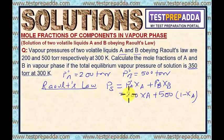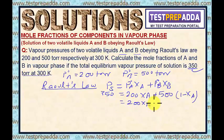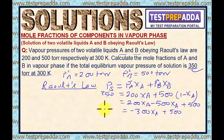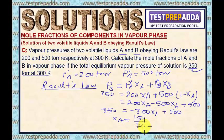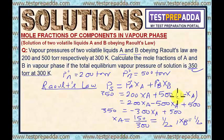We write X_B as (1 − X_A). Substituting P_S = 350: 200·X_A + 500·(1 − X_A) = 350, which gives −300·X_A + 500 = 350. Solving, X_A = 150/300 = 1/2. So X_B = 1 − 1/2 = 1/2. Note carefully: X_A and X_B here are mole fractions of A and B in the liquid phase.